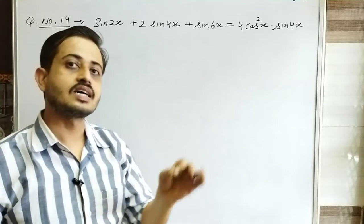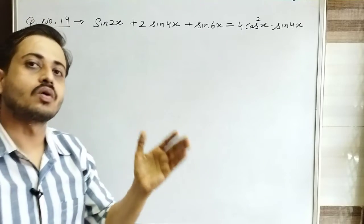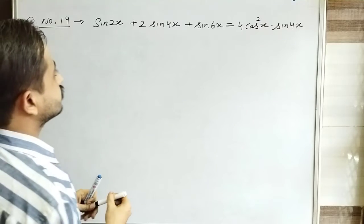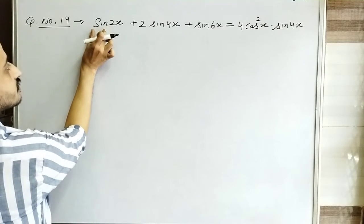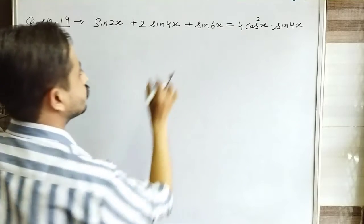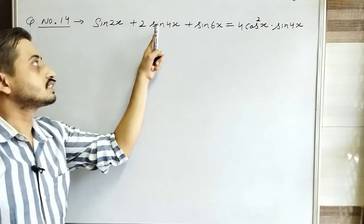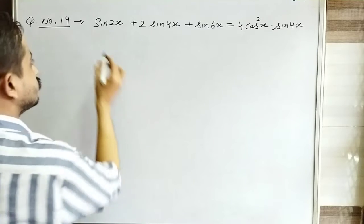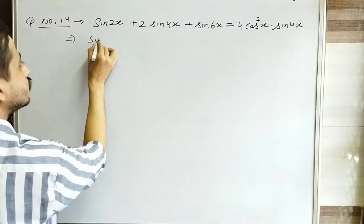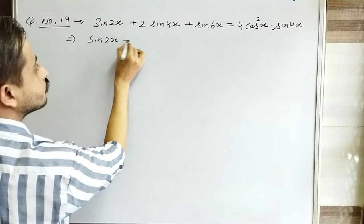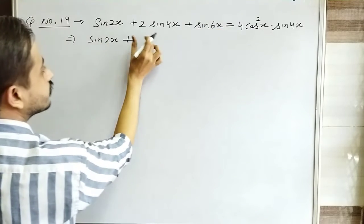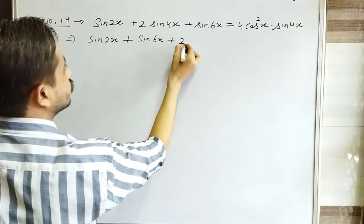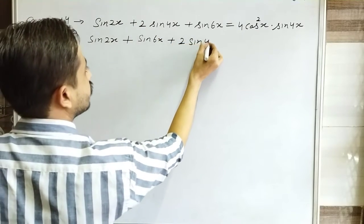I am talking about the sinC + sinD and cosC + cosD identities. Here, since there is a 2 before the sin term, the identity cannot be directly applied. So first I will arrange it: sin2x + sin6x + 2sin4x.